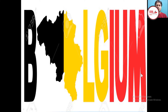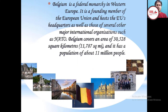Belgium is the first country we will discuss. Belgium is a federal monarchy in Western Europe. It is a founding member of the European Union and hosts the EU's headquarters, as well as those of several other major international organizations such as NATO. Belgium covers an area of 30,528 square kilometers.